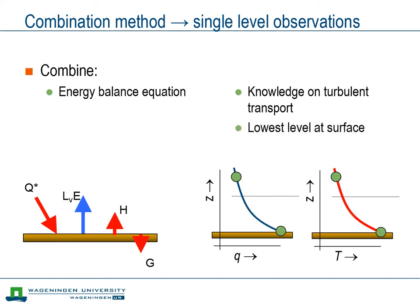Whereas in the Bowen ratio method we use observations at two heights, in the case of the Penman equation we move the lower level to the surface. And subsequently we eliminate this lower level altogether, leaving us with a method that needs single level observations only.